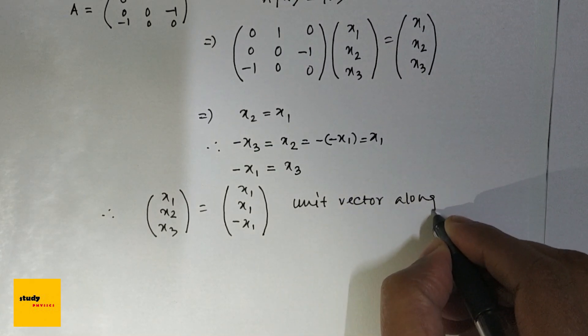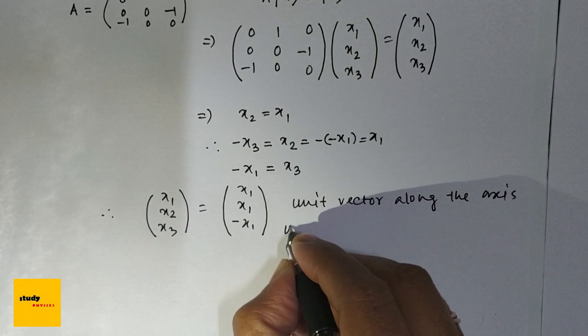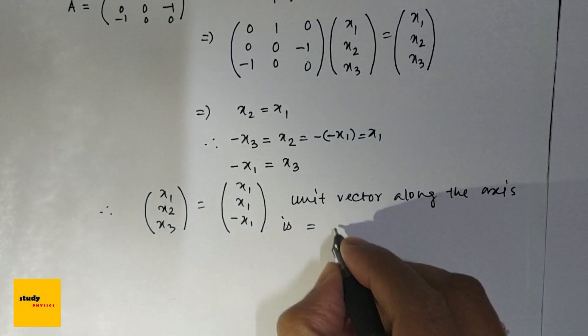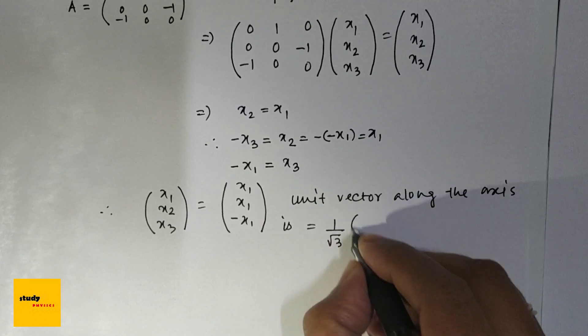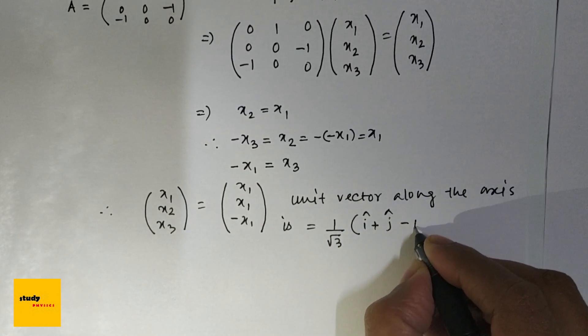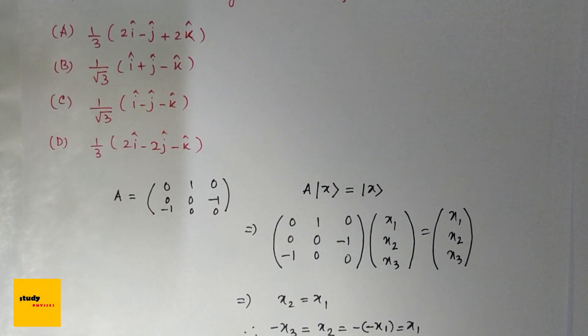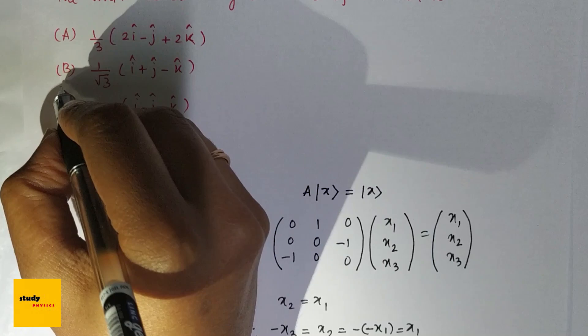along the axis as (x₁, x₁, -x₁), which therefore equals x₁(1, 1, -1). So the unit vector is 1/√3 (î + ĵ - k̂), and option B is correct.